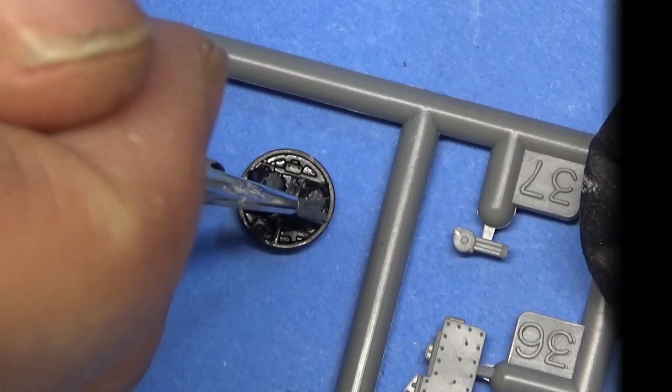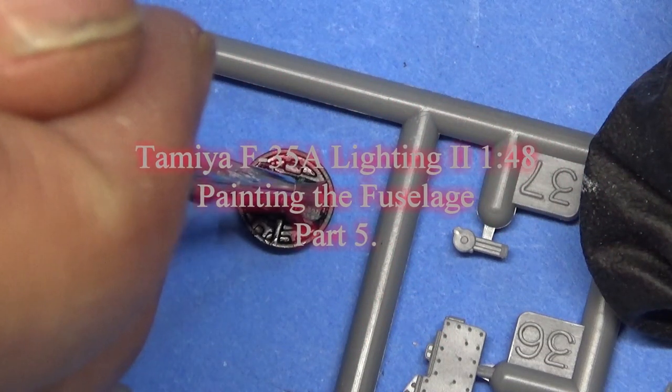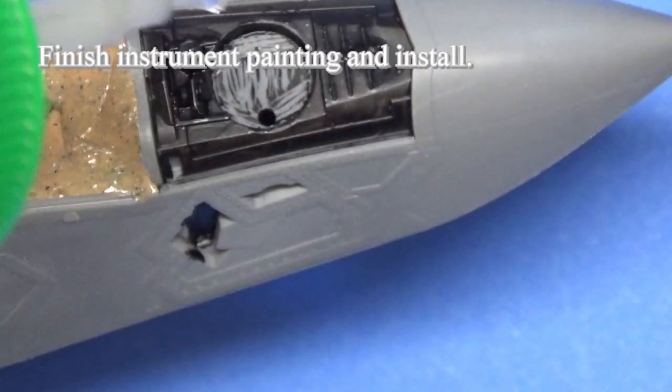Plastic Model Builders. Hello, it's me, Ari Stone with Plastic Model Builder, and this is part five of my Tamiya F-35A Lightning II in 1/48th scale. This is the build.